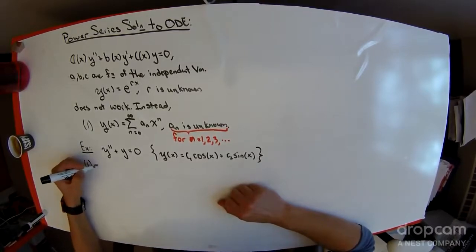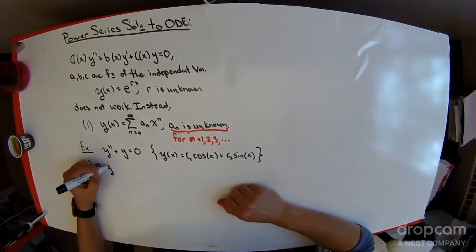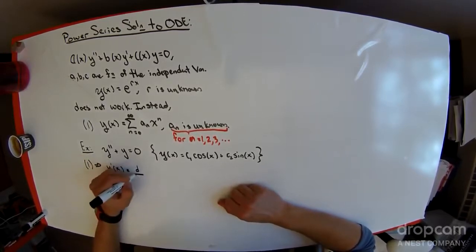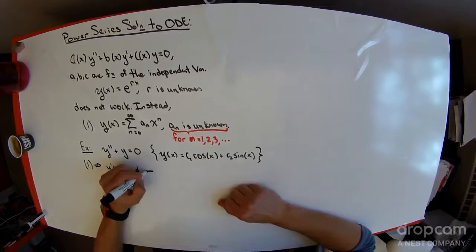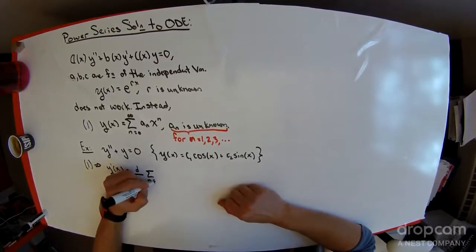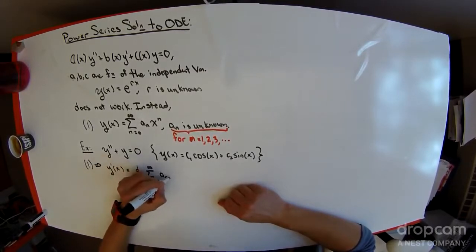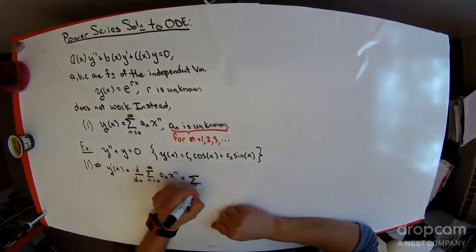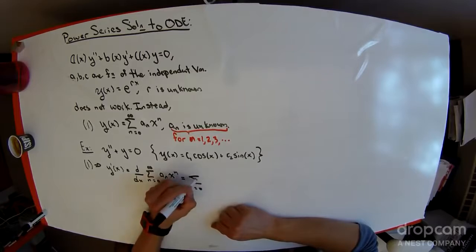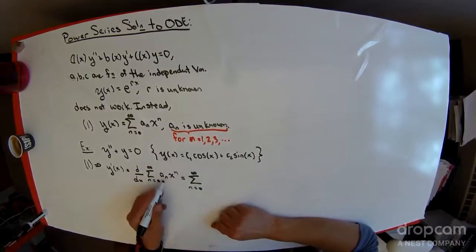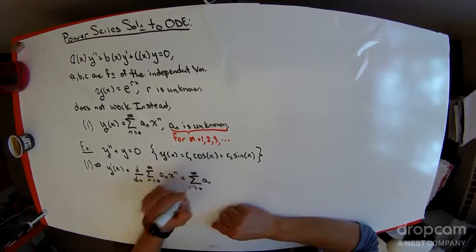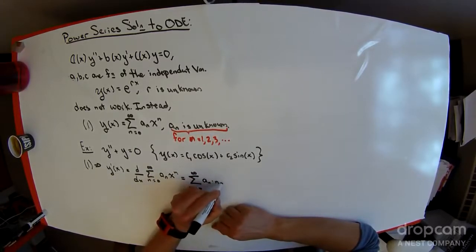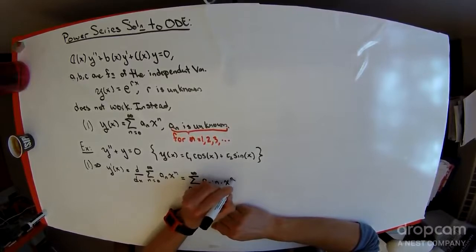Equation 1 implies that y prime of x is equal to the derivative with respect to x of the sum n equal 0 to infinity of a sub n, x to the n, which is equal to the sum n equals 0 to infinity. A sub n is a constant, so it doesn't care about the differentiation. Differentiating that x to the n gives an n multiplier and a loss of one power.